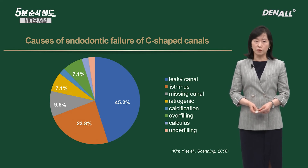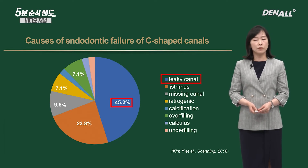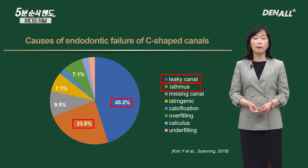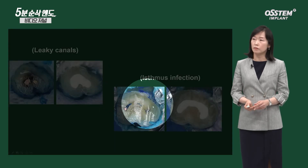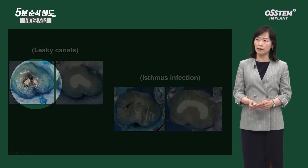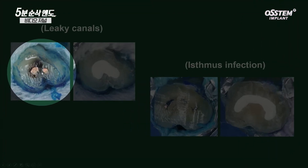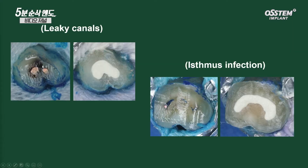I looked at why C-shape endodontic treatment failed. Most of the cause was a leaky canal. Even if you do endodontic treatment well, there was a bit of leakage. Due to the characteristic of C-shape, the isthmus was also a cause. These were the two primary reasons. If you look at the clinical image, there's a leaky canal — GP looks tightly filled, but around the GP there's leakage leading to infection and surgery.